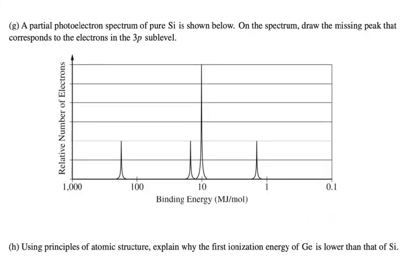A partial photoelectron spectrum of pure silicon is shown below. On the spectrum, draw the missing peak that corresponds to the electrons in the 3P sublevel. You probably already know that if you look at a photoelectron spectrum, these peaks correspond to the electron configuration.